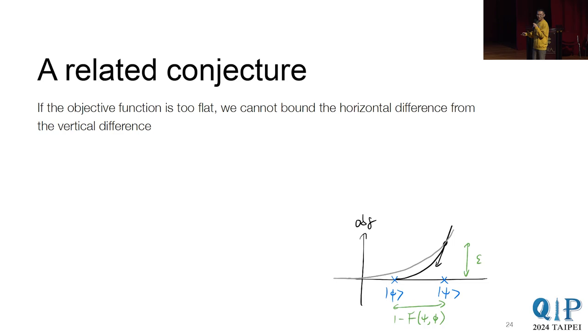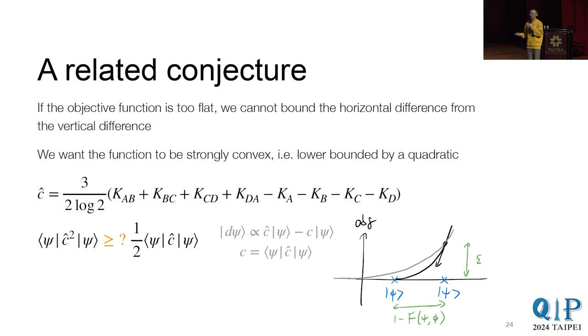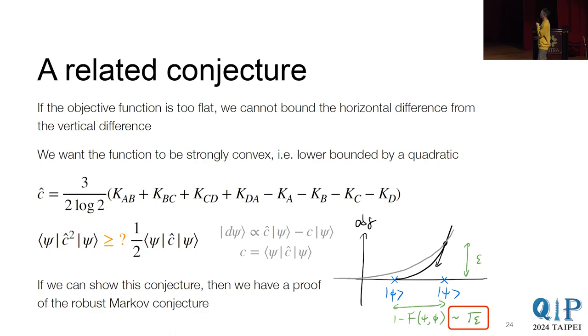So that means, additionally, we want this function to be strongly convex. That means it's lower bounded by a quadratic function. And if you work out some details, what you found is that it becomes this inequality. So here, this k combinations is exactly the same as before. And now, because you're interested in some inner product of your gradient, so you have the C squared term appearing. So if such a conjecture is true, then that would imply the function is indeed strongly convex. And you can actually show that this distance is around square root of epsilon. And that would imply the robust Markov conjecture.